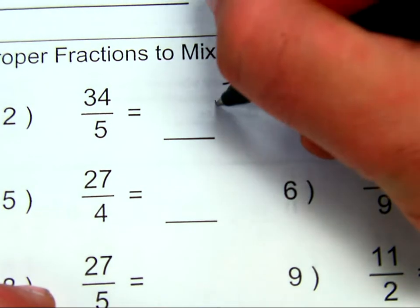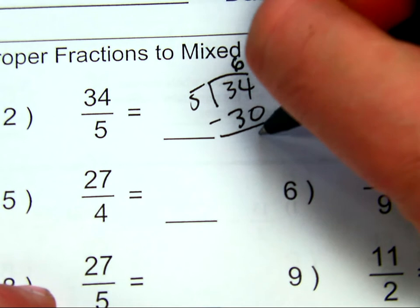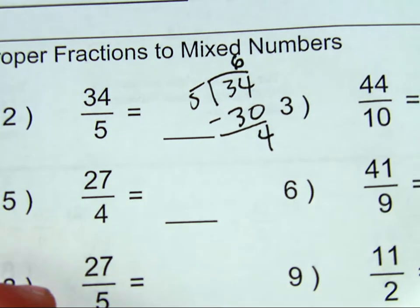Okay. So, 34 divided by 5. I know that goes in 6 times. 6 times 5 is 30. Subtract, and I get 4. That's going to be my remainder.